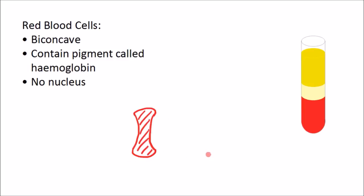And that shape increases the surface area so that oxygen can diffuse through, and it also allows the red blood cell to fit through very narrow capillaries. So they're biconcave.